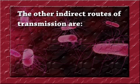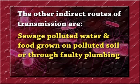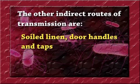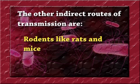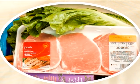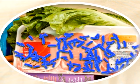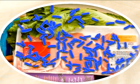Other indirect routes of transmission include contaminated utensils and equipment, sewage-polluted water and food grown on polluted soil or through faulty plumbing, soiled linen, door handles and taps, insects like flies and cockroaches, rodents like rats and mice, and infected animals and their products. Apart from these, foodborne illnesses can also be caused by cross-contamination. Cross-contamination can be defined as the transfer of microorganisms from something dirty to something clean.